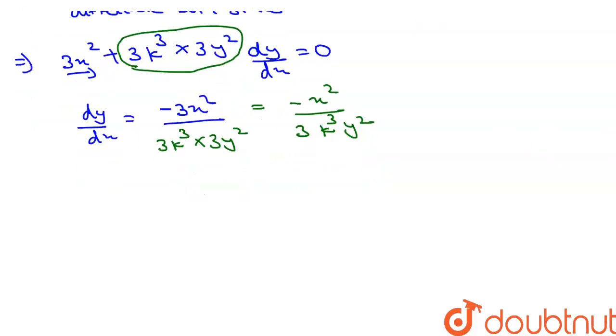So from here we can write as dy by dx, dy by dx plus x square divided by 3 k cube y square, this equal to 0.